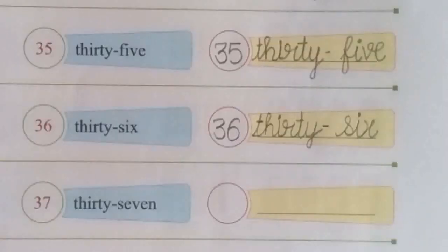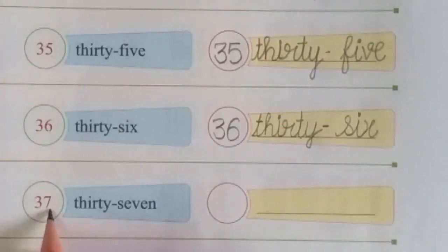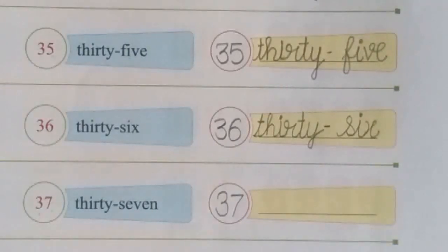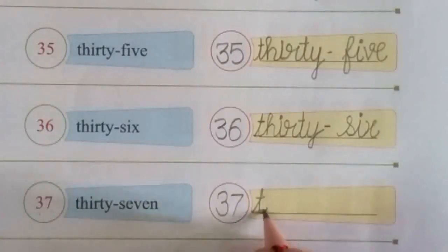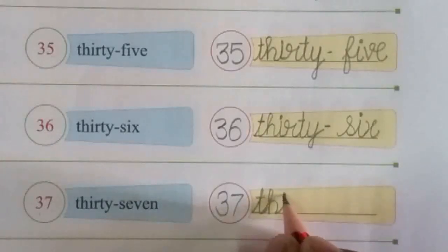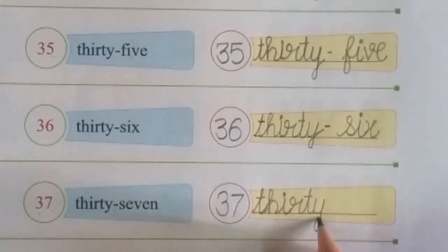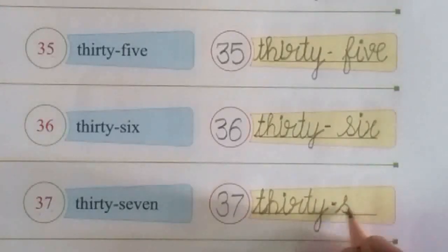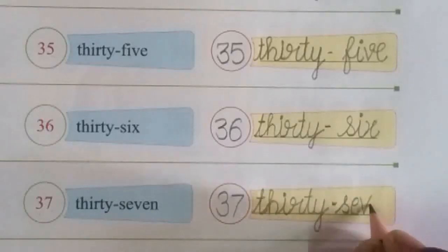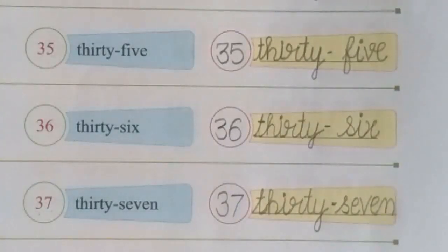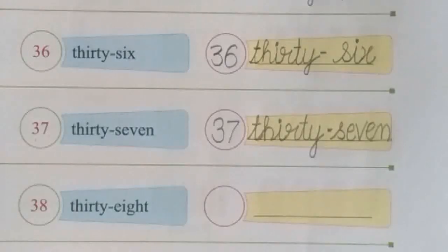After 36, number 37 comes. Write 3, 7 — 37. The number name: T-H-I-R-T-Y, 30, dash, S-E-V-E-N, 7. Thirty-seven.